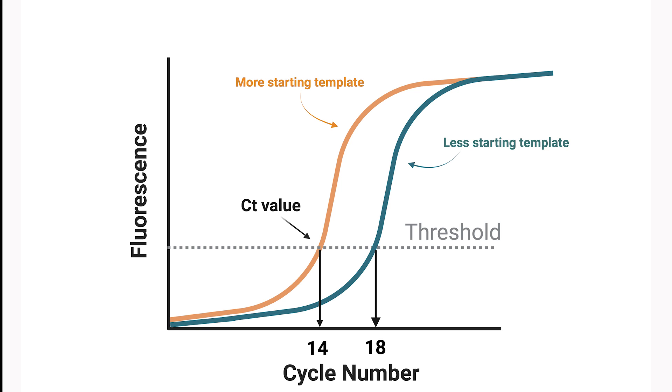But suppose we'd like to convert our CT values to some other units like copies per milliliter or nanograms of DNA. For this, we need a standard curve.